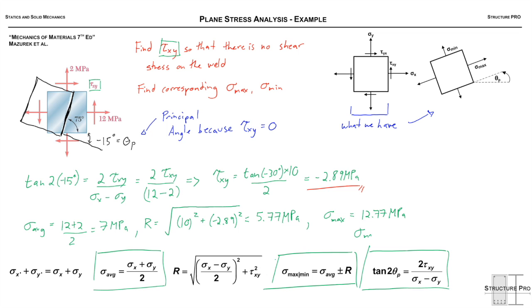And σ_min is the average minus R, or 1.23 MPa. That completes everything we're asked for. Let's reward ourselves with some bubble letters—that's kind of a guilty pleasure, adding bubble letters when you know you've aced the problem.